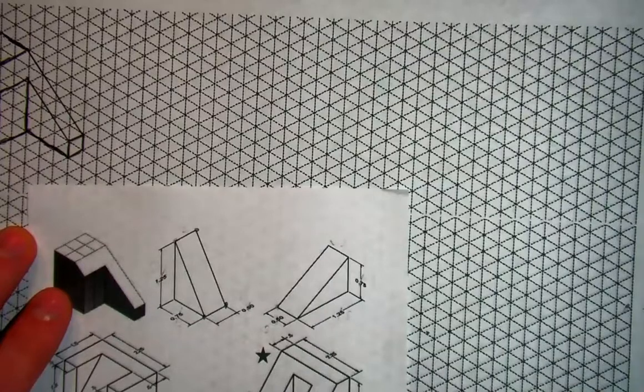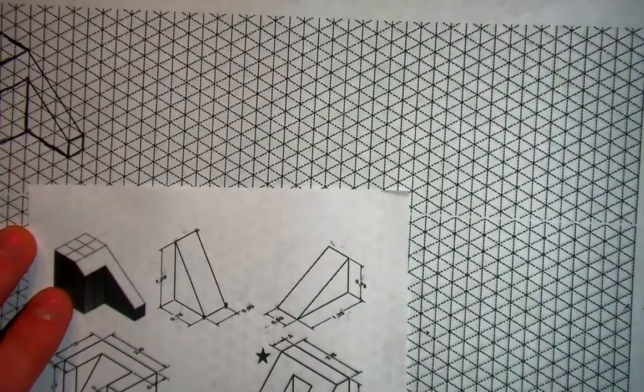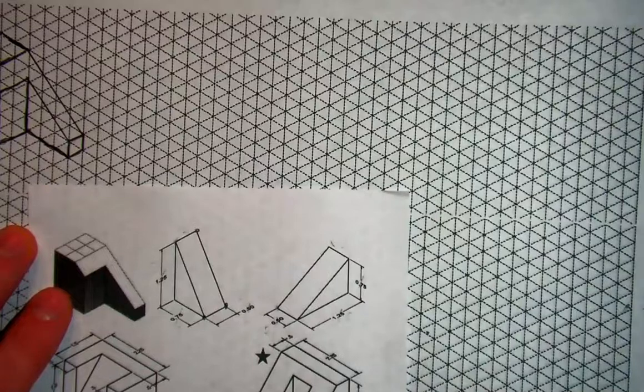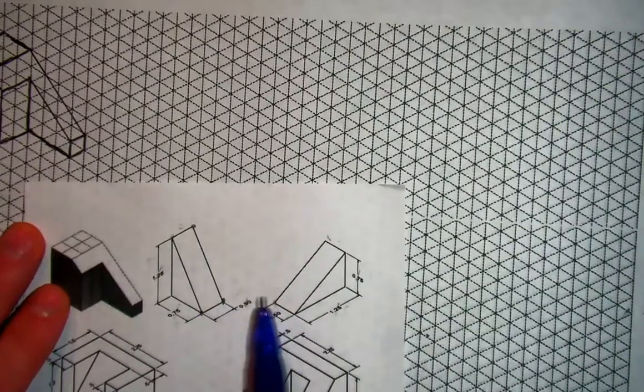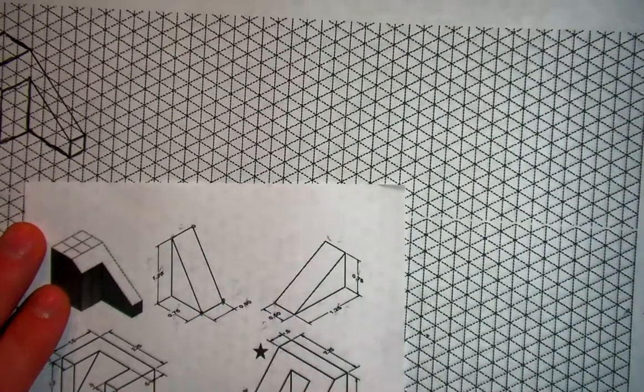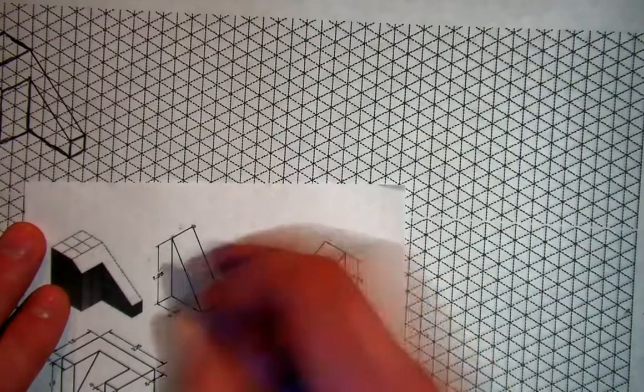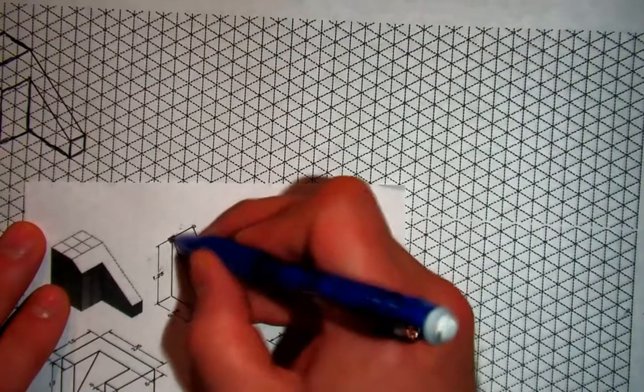Before we move on to practicing slanted shapes, I wanted to demonstrate a couple more examples of drawing slants. I wanted to use these triangle slanted shapes. Let's start with this one over here on the left, and I'm going to start with this corner up here.